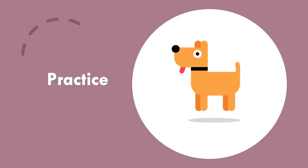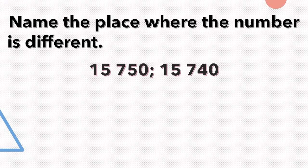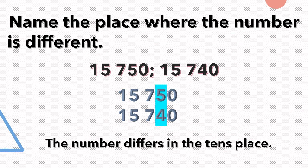Let's practice! Name the place where the number is different: 15,750 and 15,740. Remember to line up your numbers and always start comparing from your left. Both digits in the 10,000 place are the same, both in the thousands place are the same, both in the hundreds place are the same — the numbers differ in the tens place.